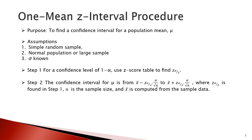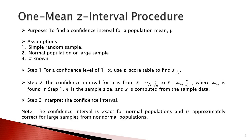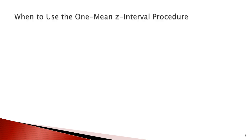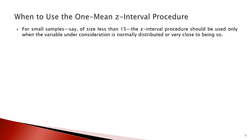Finally, we can interpret the confidence interval. One important thing is that we can obtain an exact confidence interval for a normal population, but only an approximated confidence interval for large samples of non-normal populations. Now let's move to the next section on when to use the one mean Z-interval procedure.